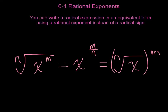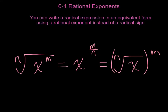In general, when you have the nth root of x to the m power, you can rewrite it with the exponent of what's under the radical being the numerator, and the root being the denominator of the new exponent. This can also be written with n being your root, and m, or what's underneath your radical, coming outside and raising the entire radical to that power.